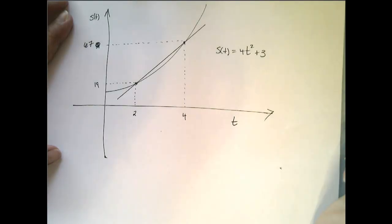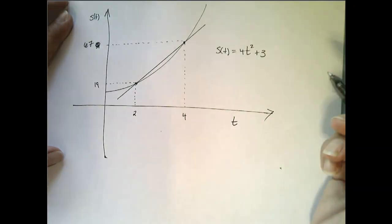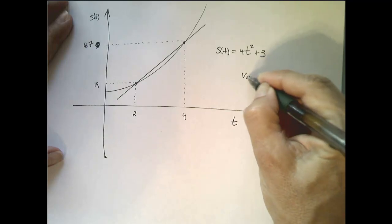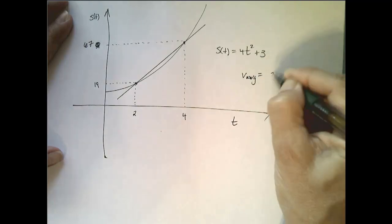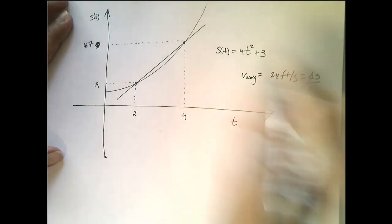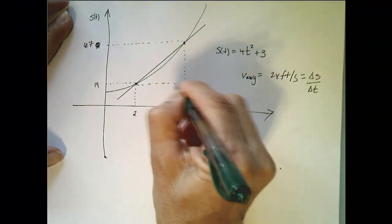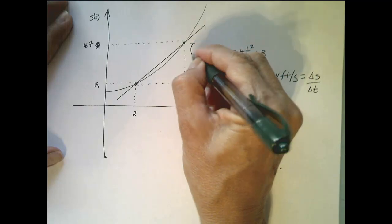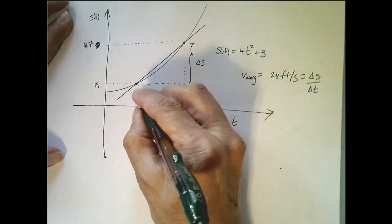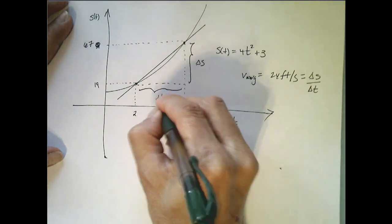And so what we found on the last page was that the average velocity was equal to 24 feet per second. And remember how we did that. It was the change in the position divided by the change in time. So if I were to draw this little triangle right here, that is the change in position, and this is the change in time.